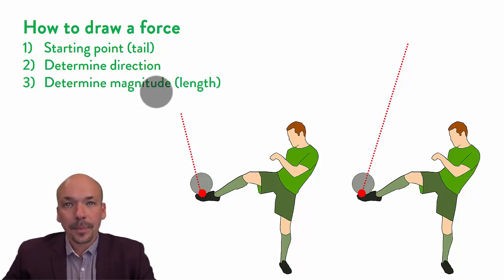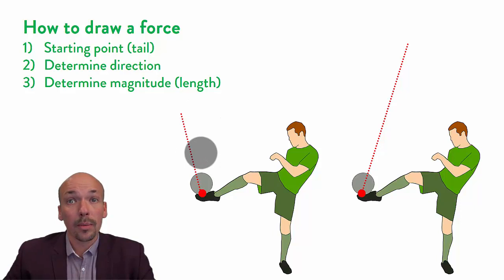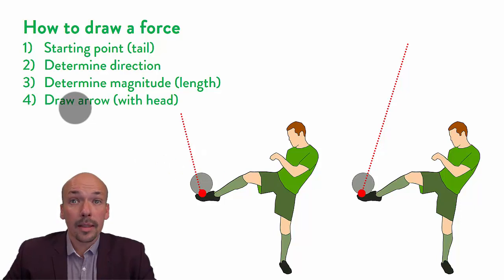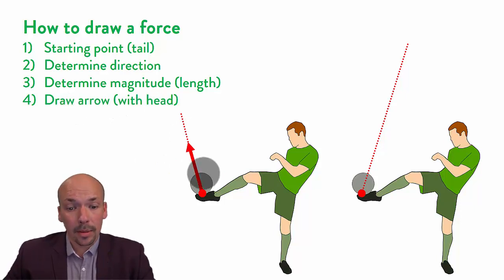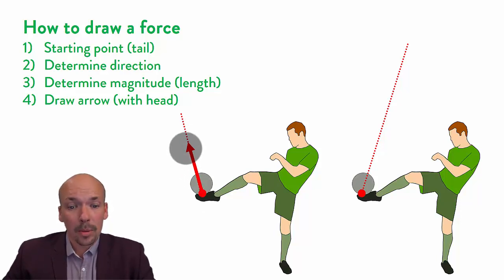The third thing: you have to determine the magnitude — the length. So if a force is very large, then the arrow which will be drawn will be very large, and if the force is very small, then the arrow will be very small. And the last thing is it needs to be an arrow with a head. If you don't draw the arrowhead, then you will probably get minus points. It needs to be an arrow.